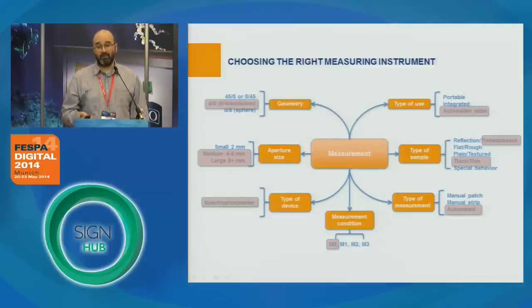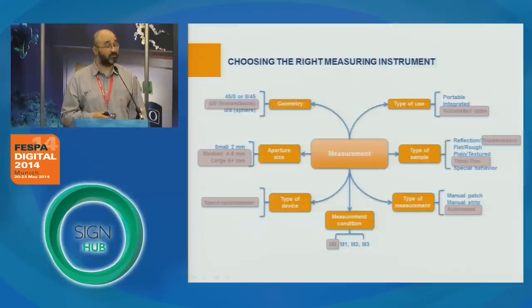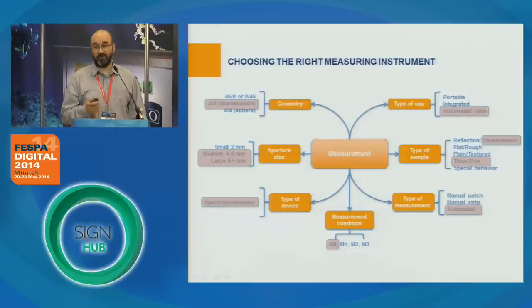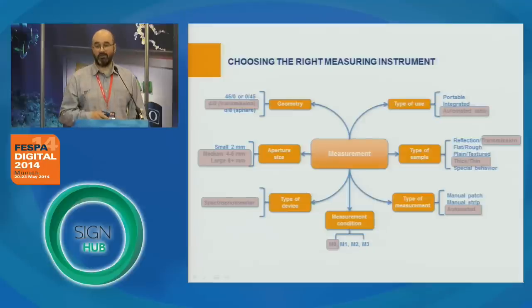Because we are measuring a lot and transmission mode measurements are usually slow, we need an automated device. We have both thick and thin samples, so we would prefer to have an automated measurement process in order to give us time to do something else until the measurement is done.